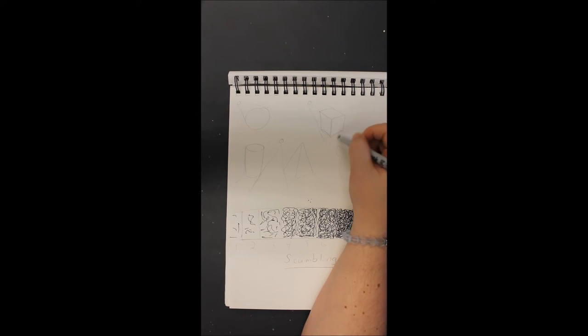So this should be our darkest area since it's getting the least amount of light. So I know that my lines are going to be tighter together, they're going to be close.